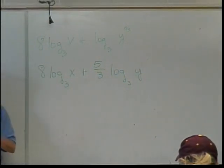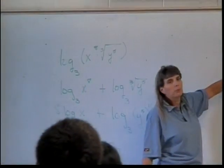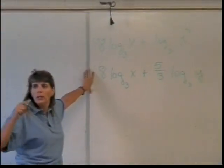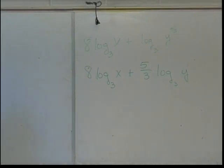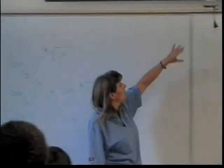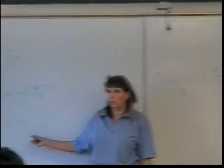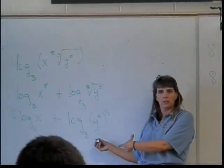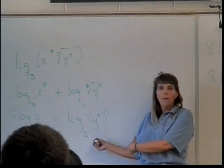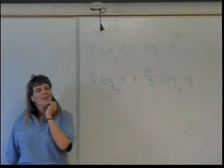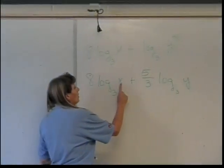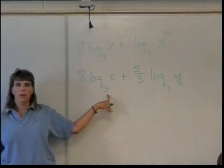Now, a couple of comments. One, you cannot skip from this step directly to this step. The rules only allow you to break up one thing at a time. You could go from this step to this step to this one to that one. So you could skip this step right here because a lot of people just see that in their heads. I didn't skip it because I wanted to make sure everybody was clear on that. But you can't go straight from here to here because the rules don't allow you to do that. Second thing, what is the argument of this log base 3 and how do I know?